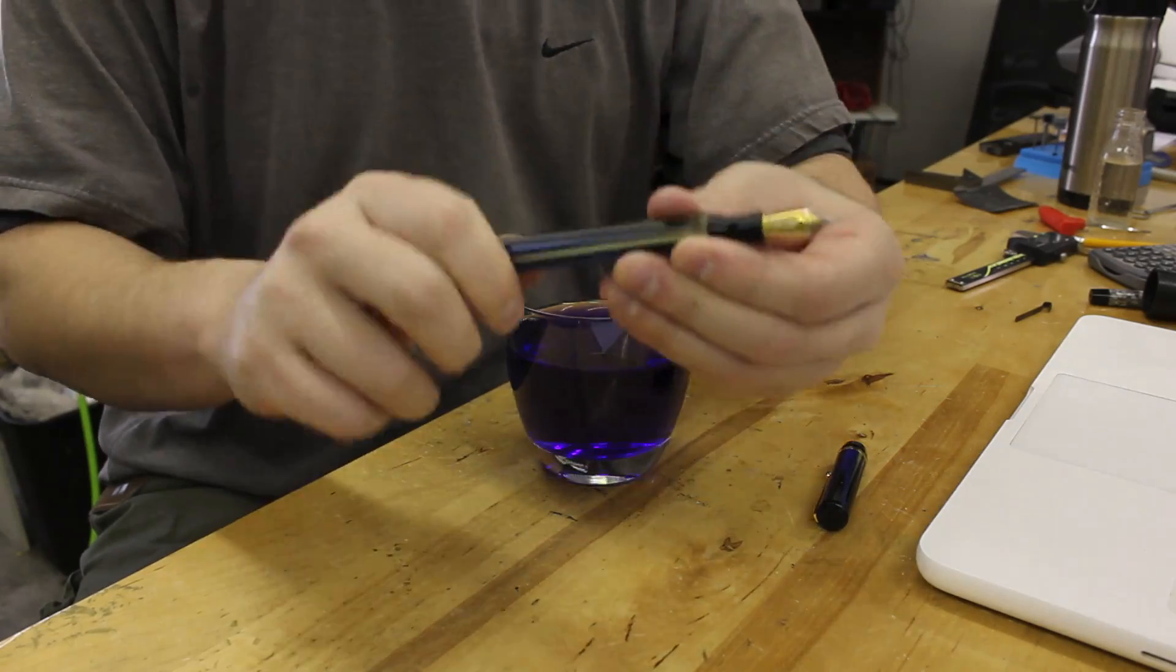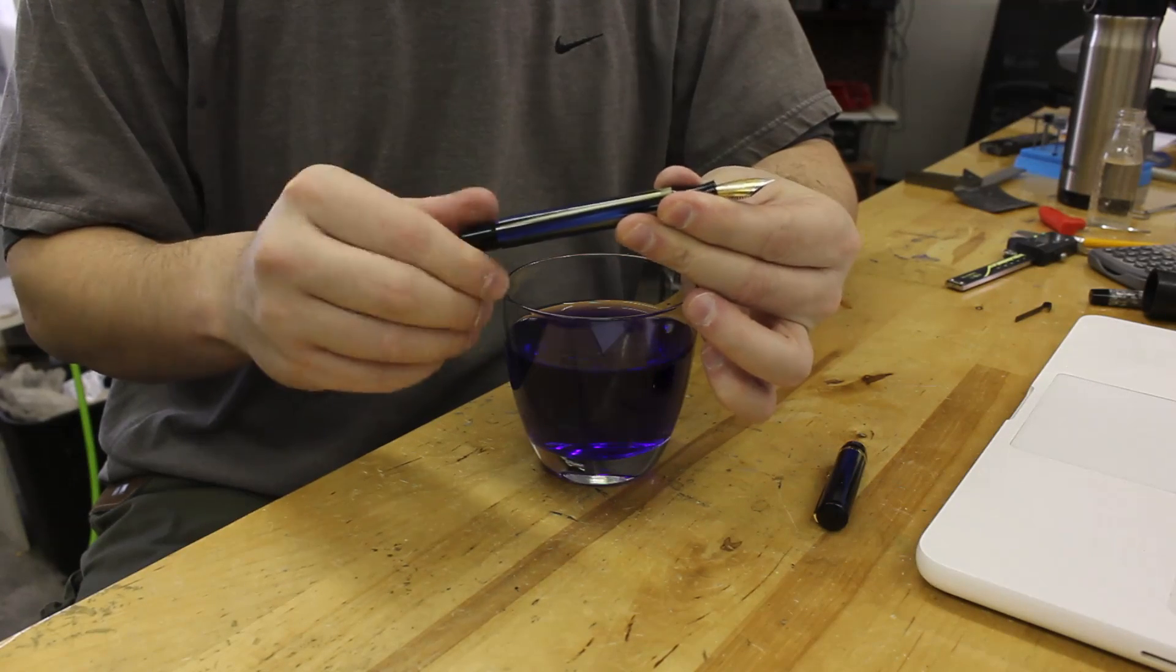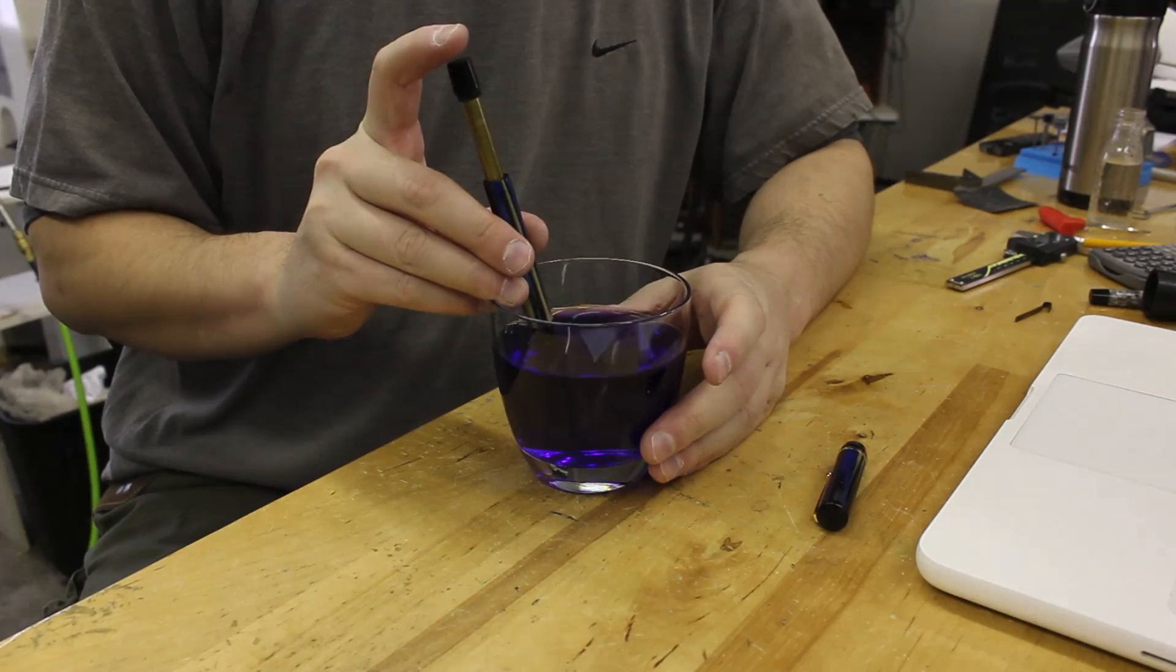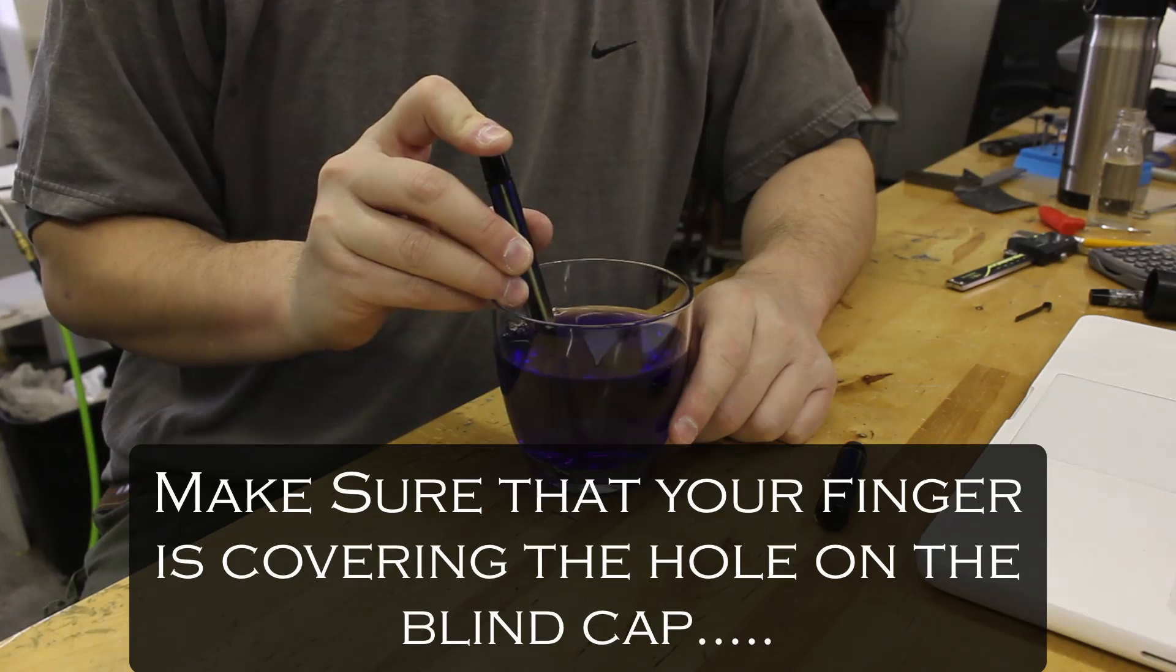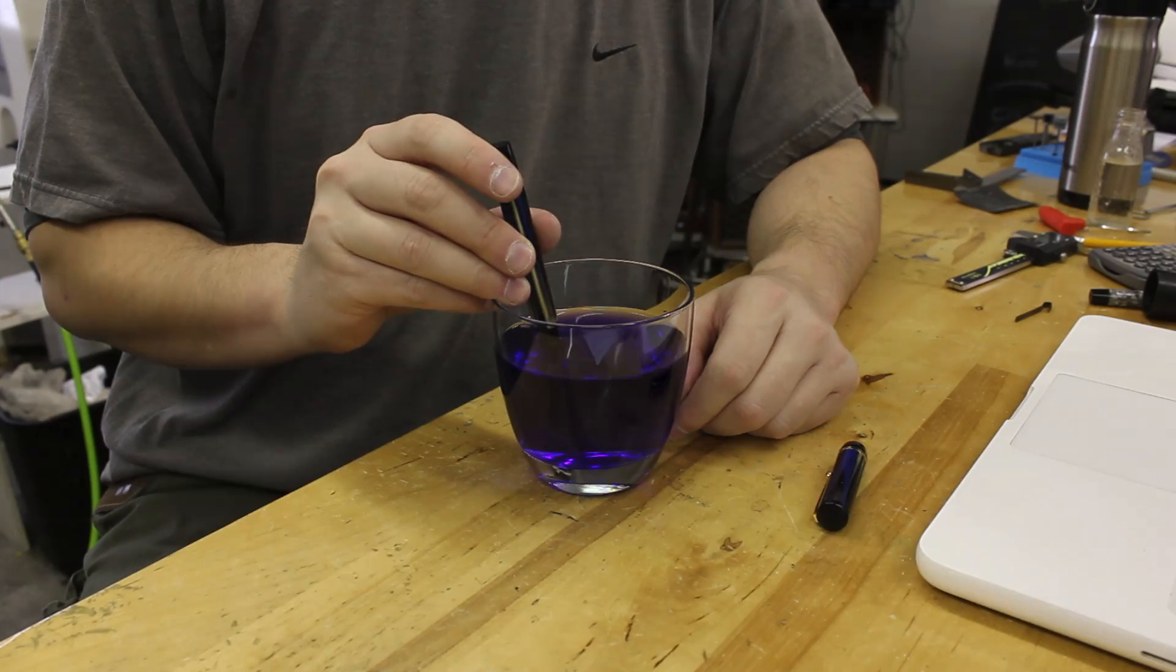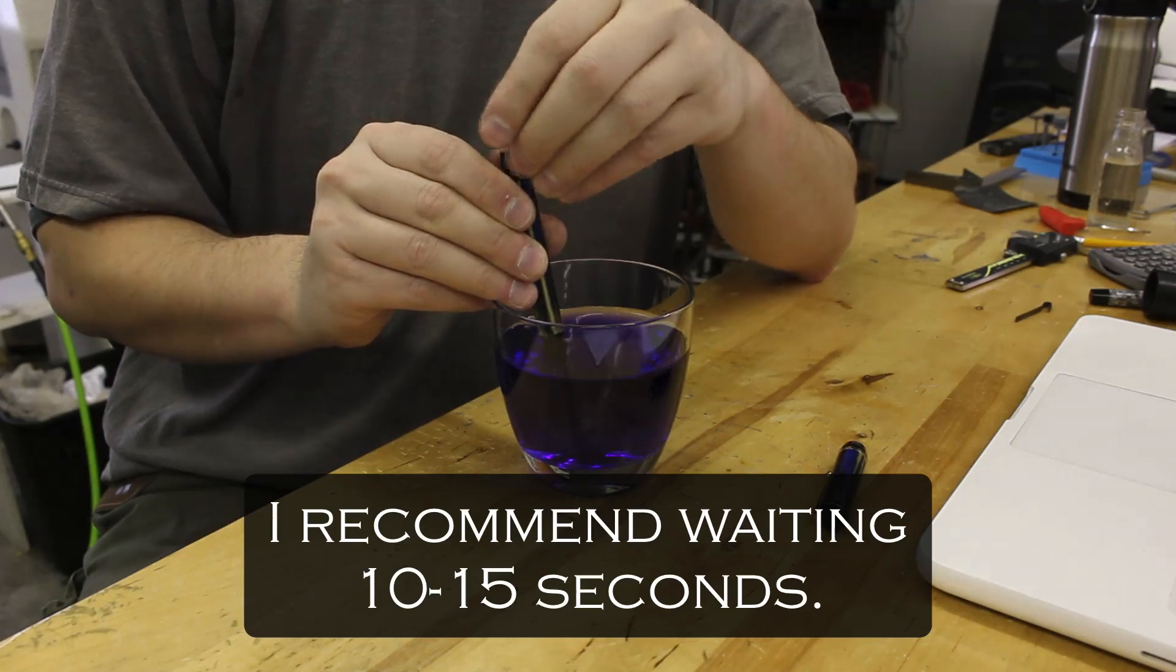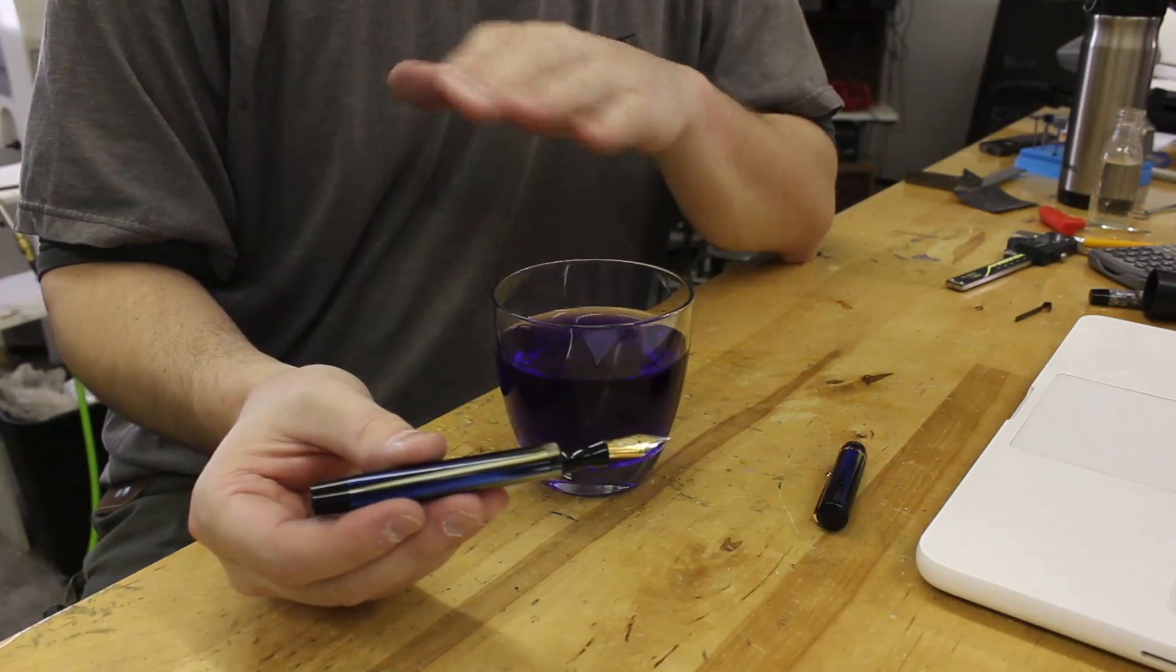You only need to use one hand. Essentially, what you will do is unscrew the blind cap. Pull out the piston sleeve or the tube, if you will. Submerge this into your ink up to the section, and then you simply push down with your finger. You'll see that air or bubbles were expelled out of the nib as I pushed down, of course. And now you want to wait about ten seconds.